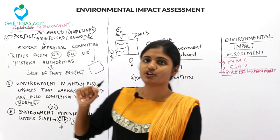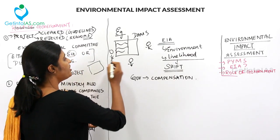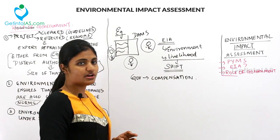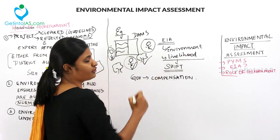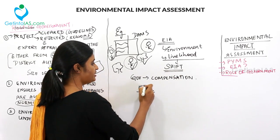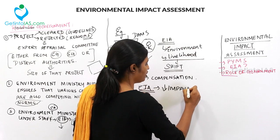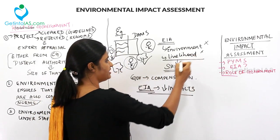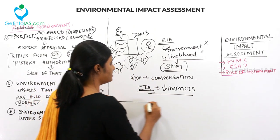An example of EIA concerns people: if you're building a dam inside a forest, the people living there will have to be shifted from one place to another, and there will be a lot of cutting of trees. There are two impacts — one related to the people and one related to the environment. EIA should minimize or decrease the level of impacts to the environment, and the government should give compensation to the displaced people. These are the roles of the government.